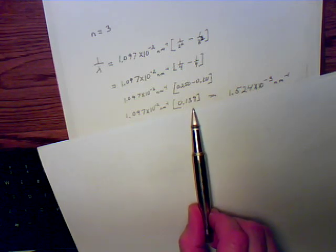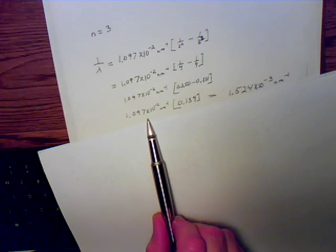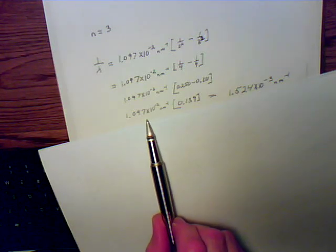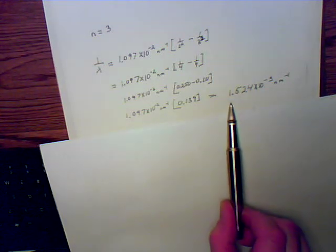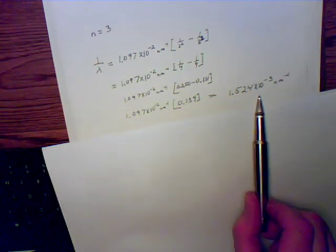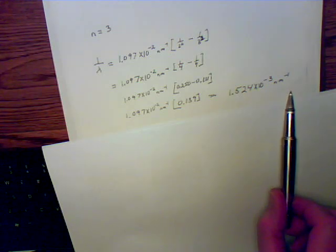Multiply that number times the Rydberg constant 1.097 times 10 to the minus 2 reciprocal nanometers and you will get 1.524 times 10 to the minus third reciprocal nanometers.